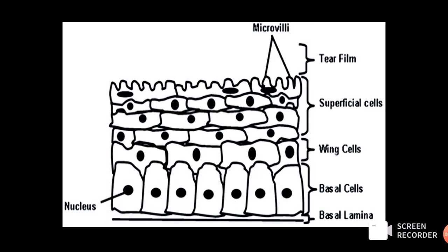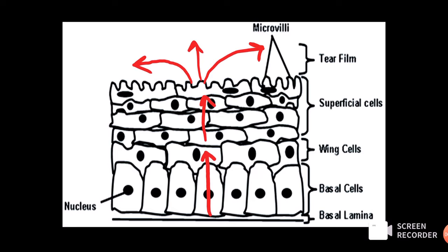The epithelium can be divided into the superficial squamous cell layer, the middle wing cell layer, and the innermost basal cell layer. Among these three, basal cells are the only ones capable of mitosis. New cells formed from the basal cells are pushed anteriorly, transforming into wing cells, then into superficial cells, after which the superficial cells lose their desmosomes and are shed into the tear film.